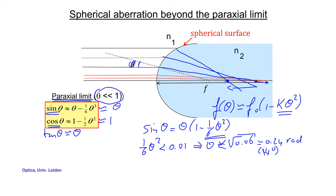This effect is called spherical aberration. It's an excursion in this lecture because we typically assume small angles, and for now we'll forget about this effect.